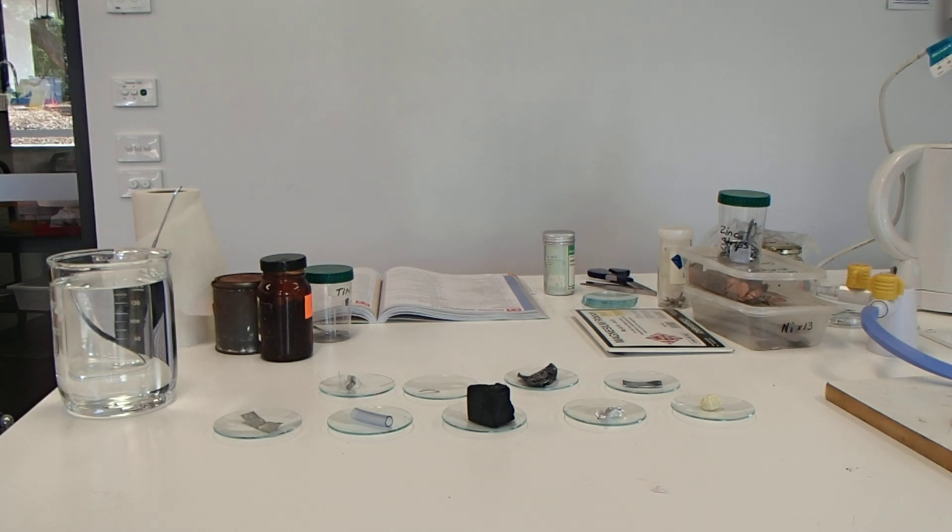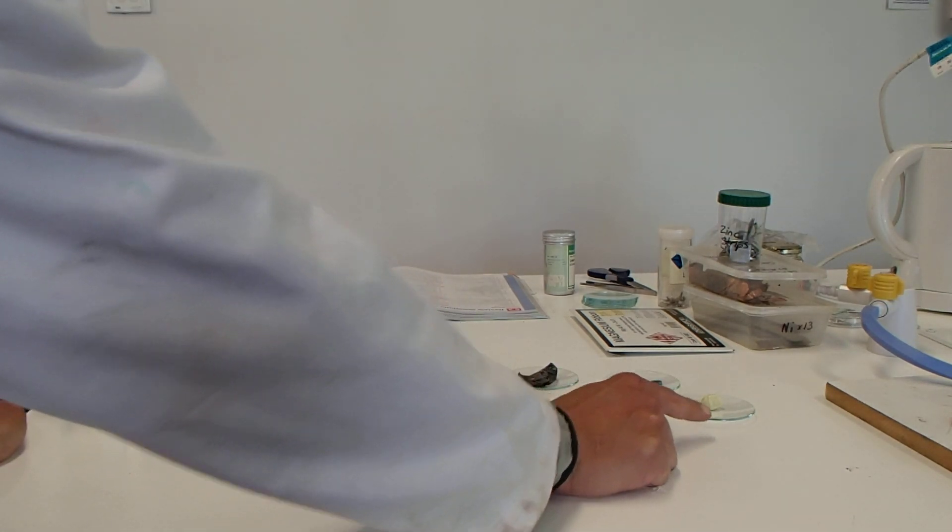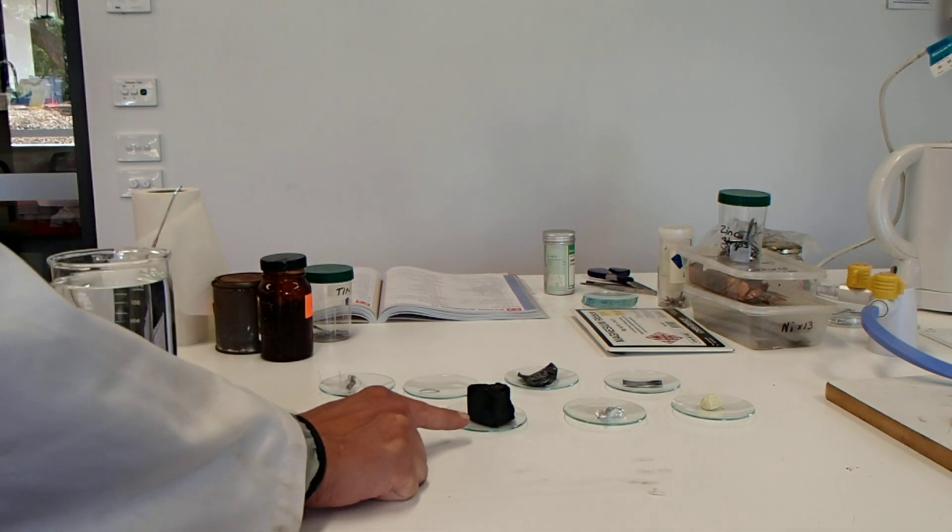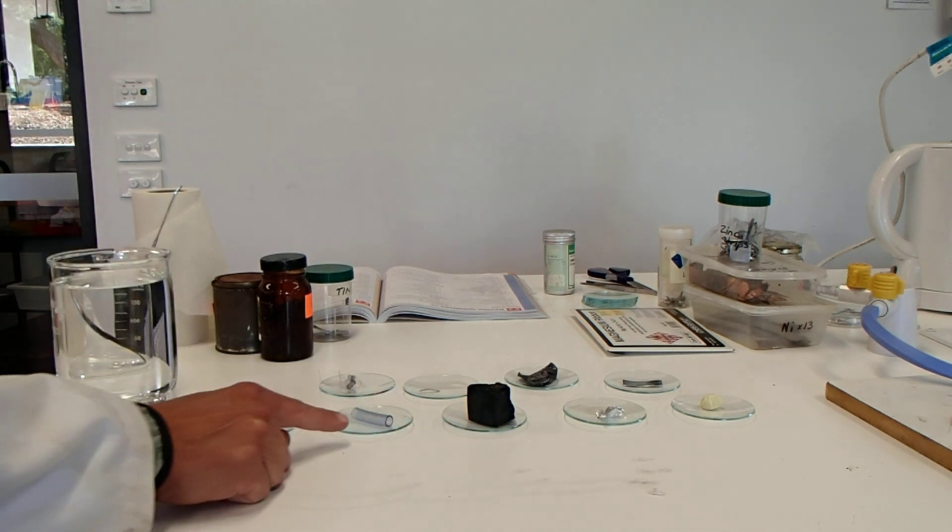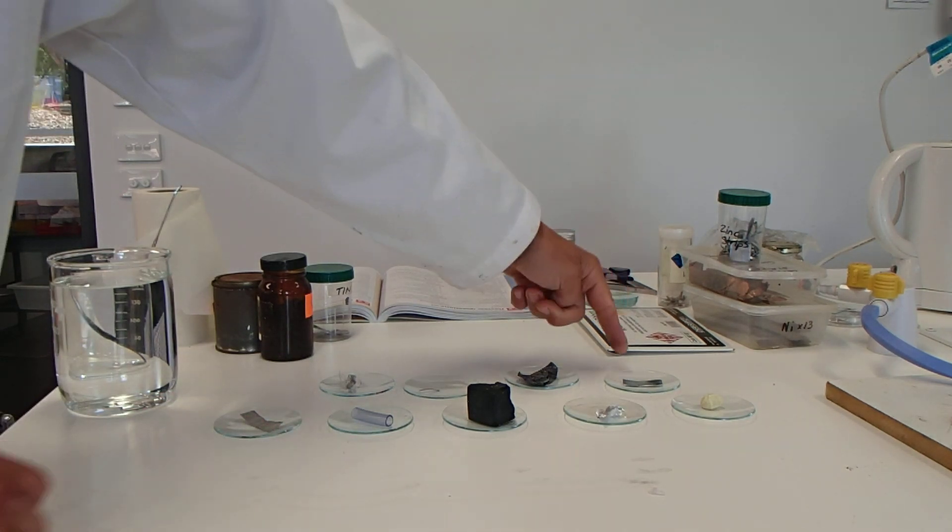I'll just show you the samples we've got today. We've got sulfur, aluminum, carbon, silicon in the form of some tubing, tin, zinc, some lead, magnesium, and iron.